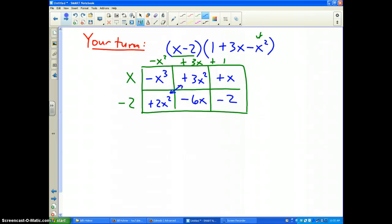So my final answer is -x³, which is that one. And then these two right here make +5x². These two make -5x, and last I have -2. So there you go. And that's multiplying binomials times a trinomial.